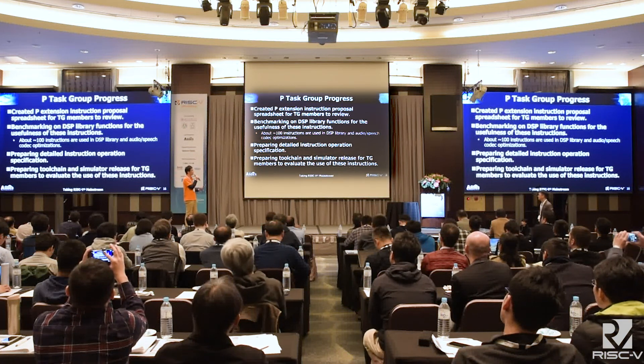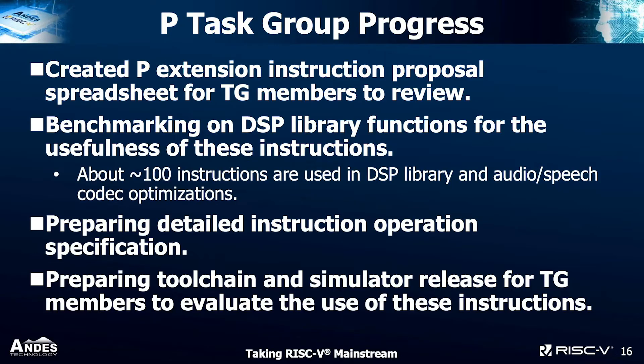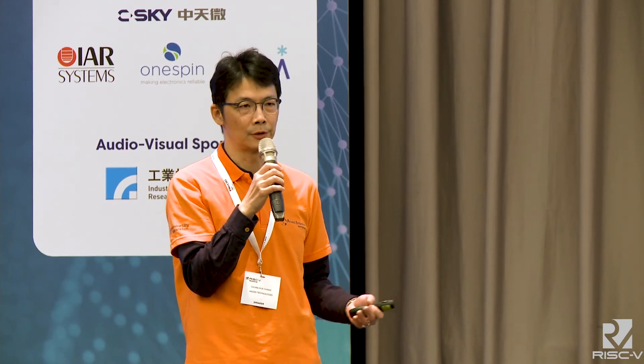The current P-extension status is that we have released a P-extension instruction proposal spreadsheet for test group members to review. We are currently benchmarking on various applications such as audio, speech codecs, and neural network applications, in which more than 100 instructions are used. The next steps in our plan are to release a detailed instruction operation specification and also release a toolchain and simulator for test group members to evaluate these instructions.